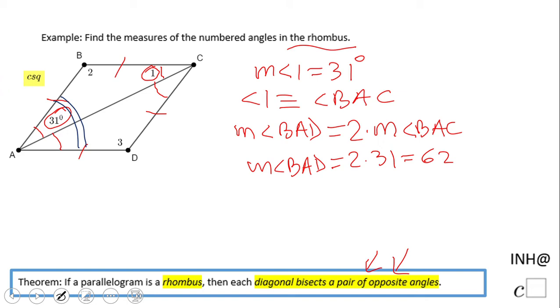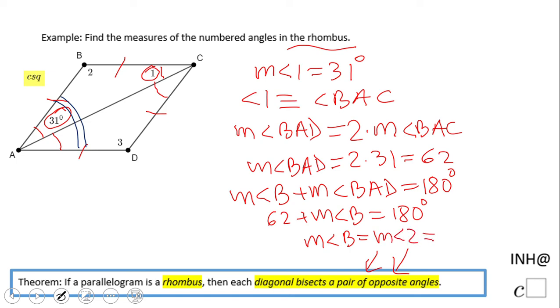Now we can find the measure of angle B because angle B and angle BAD are supplementary. Consecutive angles in a rhombus or parallelogram are supplementary, so we have 62 plus the measure of angle B equals 180. That will give us the measure of angle B, which is angle 2. The measure of angle B will be 118°.